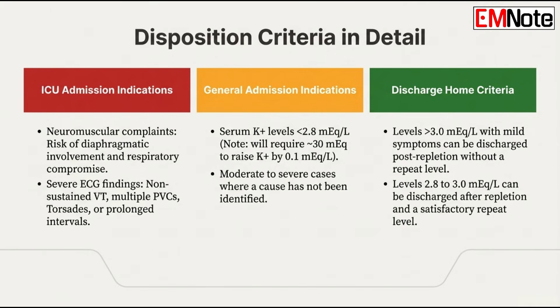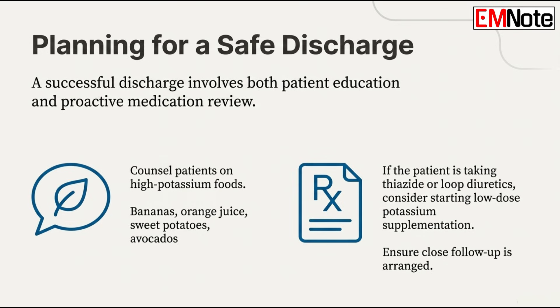For safe discharge: patients with mild symptoms and a potassium greater than 3.0 can be safely discharged after oral repletion — crucially, they do not need a repeat level before leaving. If their level is in the gray area between 2.8 and 3.0, they can often be discharged but only after repletion and a repeat level confirming the potassium is coming up. Before they walk out, counsel them on high-potassium foods — bananas, orange juice, avocados — and if they're on a diuretic like a thiazide or a loop, seriously consider starting a low-dose potassium supplement and ensure close follow-up.